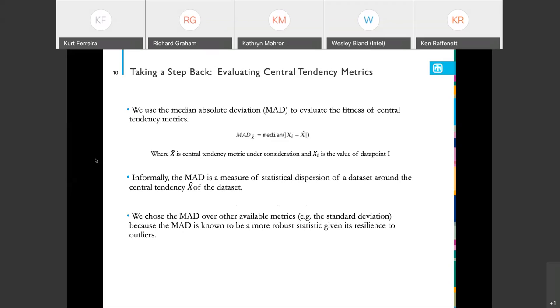So we take all the differences and then we find the absolute median of that difference. Informally, this MAD is essentially a measure of the statistical dispersion of the data set around some central tendency. We chose the MAD over a number of available metrics, for example, like the standard deviation, because within statistics, the MAD is known to be a more robust and resilient statistic to outliers.